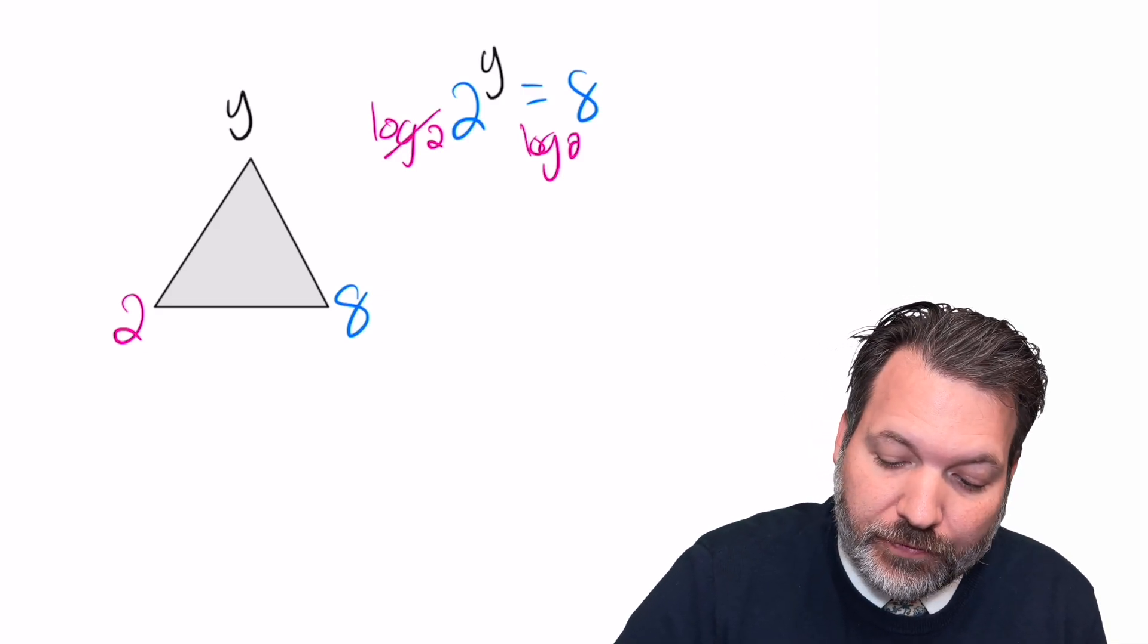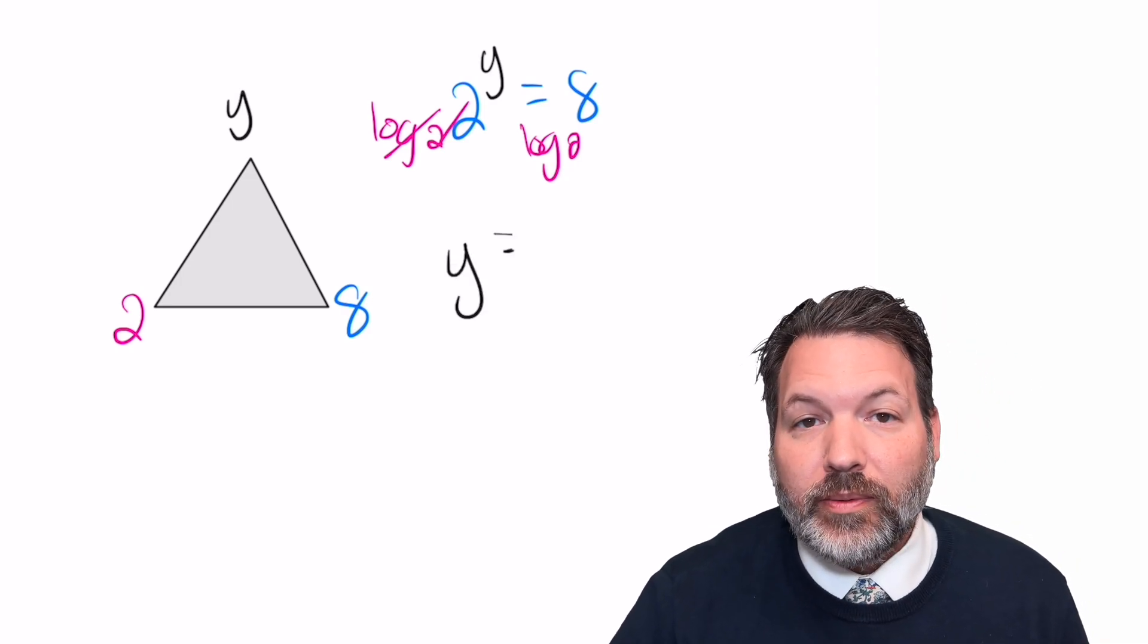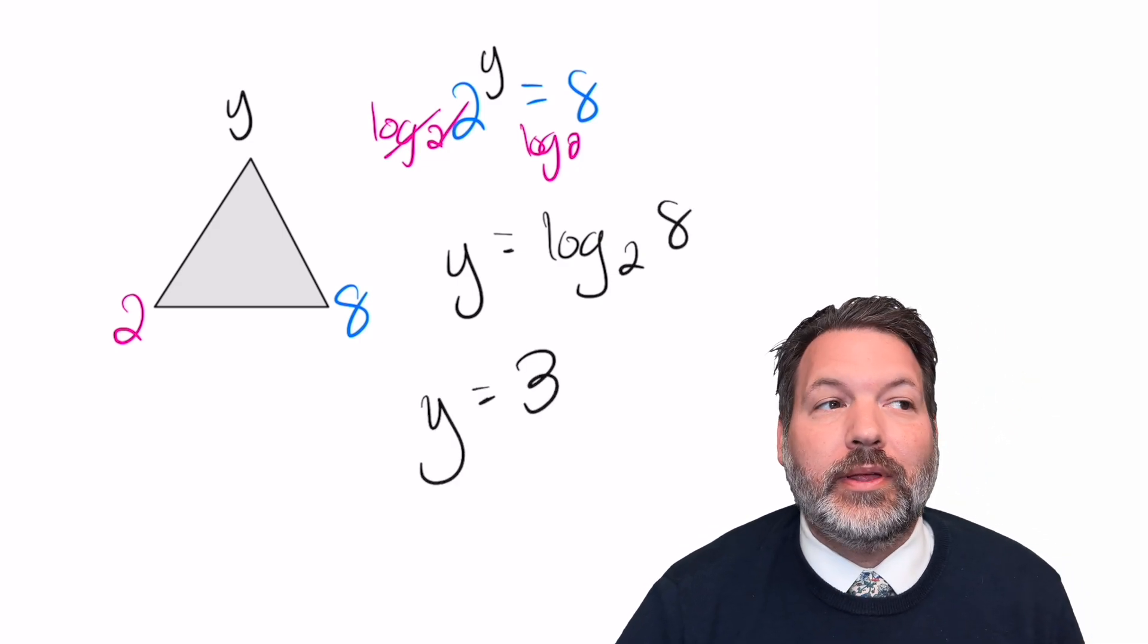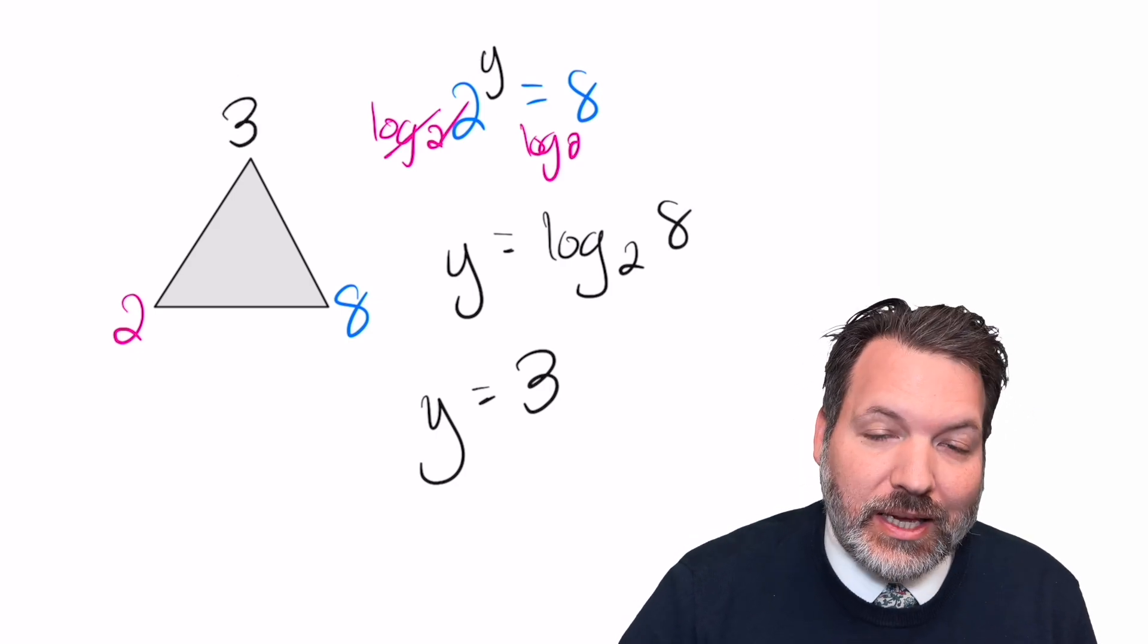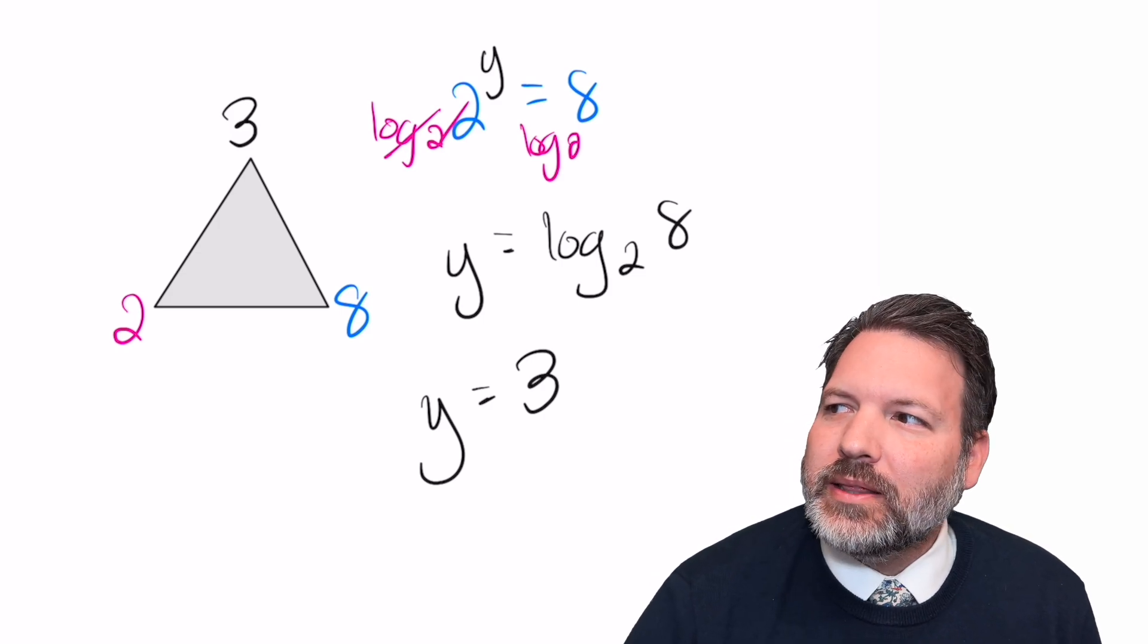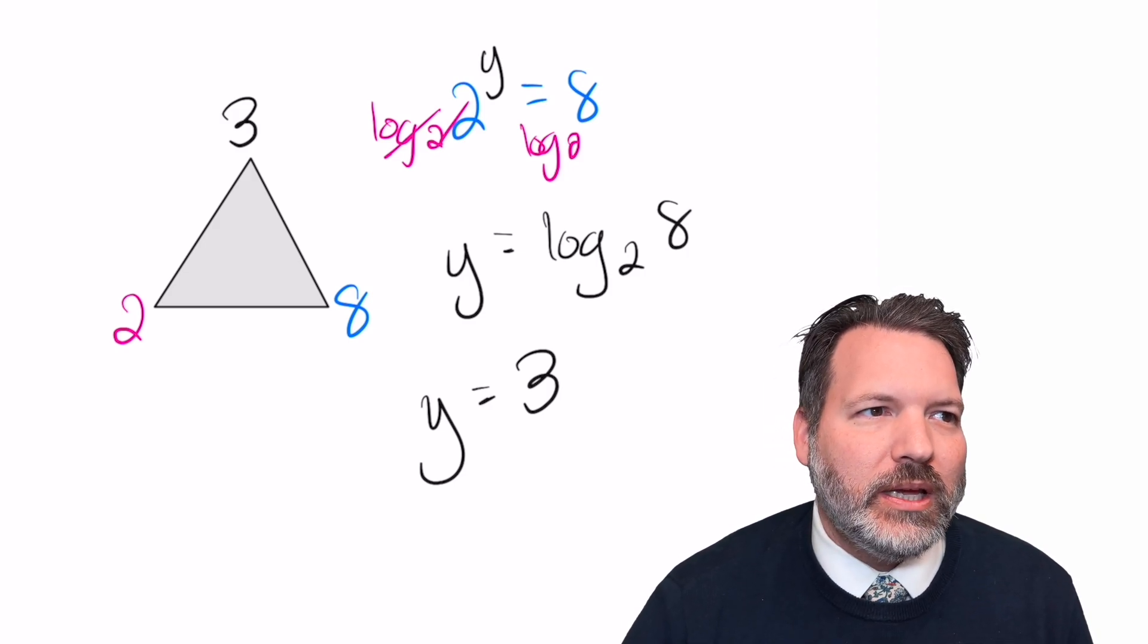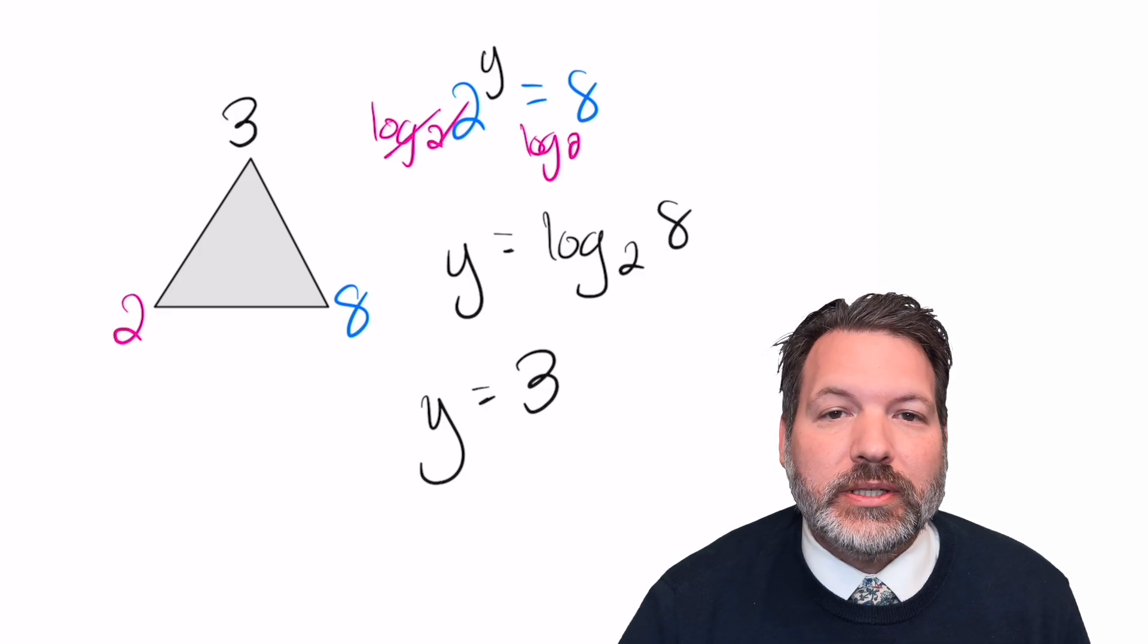And again, that works just fine. Log base 2 of 2 ends up canceling in some sense, leaving me with the unknown I'm trying to solve for. On the other side, I have log base 2 of 8, and if you type that into a calculator, it's certainly true. Log base 2 of 8 is 3, and we have successfully recovered that top corner of our triangle. But why is it that we needed two different kinds of inverses for this exponential equation when we only needed division to undo multiplication or subtraction to undo addition?